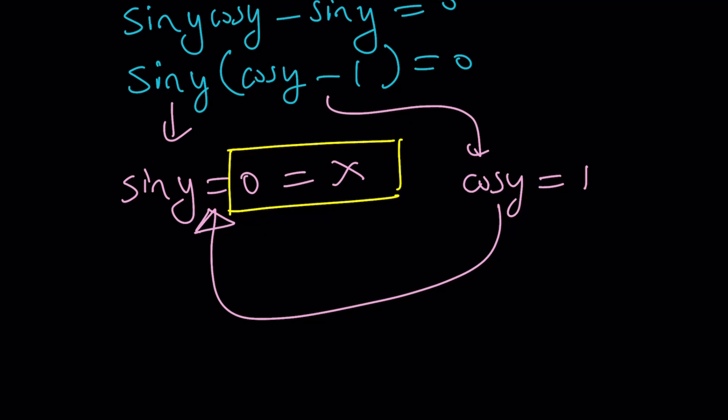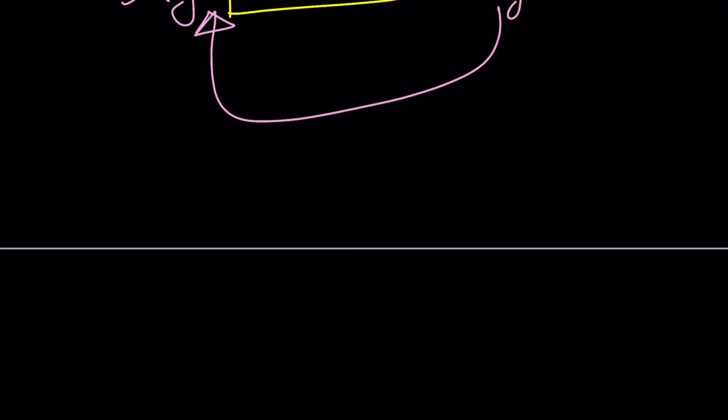And that kind of makes sense because if you replace x with zero, arcsin zero is zero and arctan zero is also zero, so they're equal. Make sense? All right. Let's take a look at the second method.